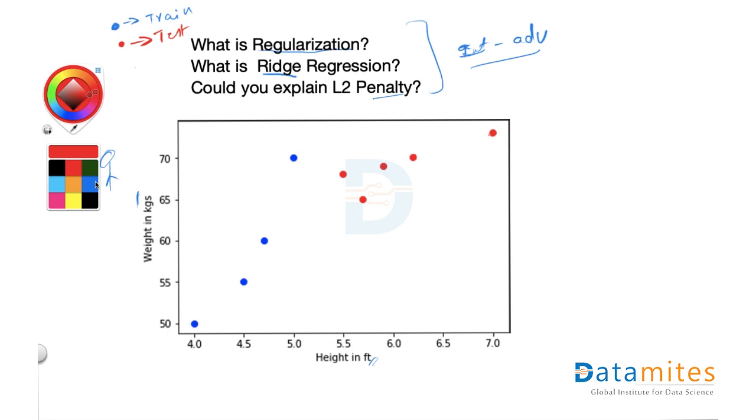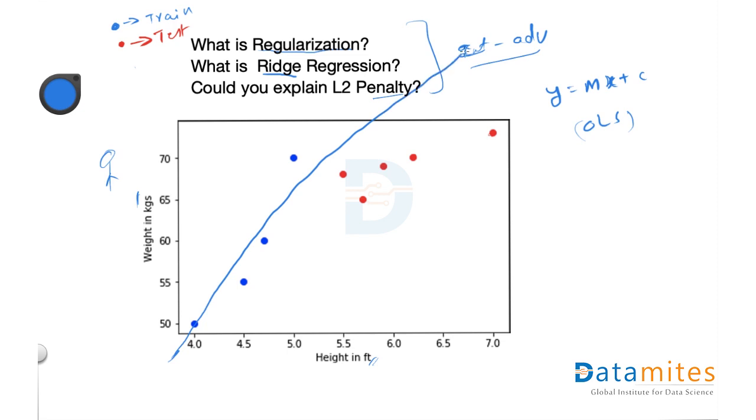So if you draw a linear regression line, I assume that if you don't know what is linear regression, you have to go back to linear regression video. So if you draw a linear regression line, the line would be something like this. So we try to minimize the error of the line equation, which is y is equal to mx plus c, and we use ordinary least square method. The line might fit something like this.